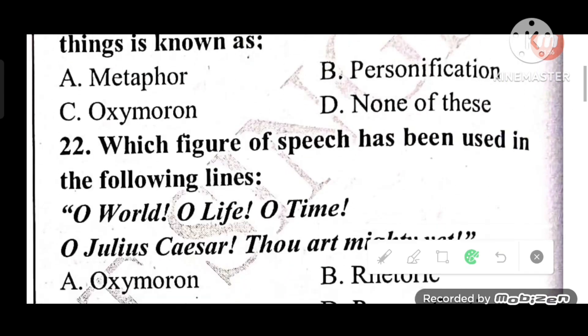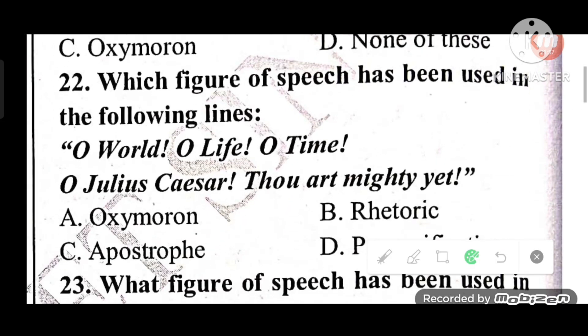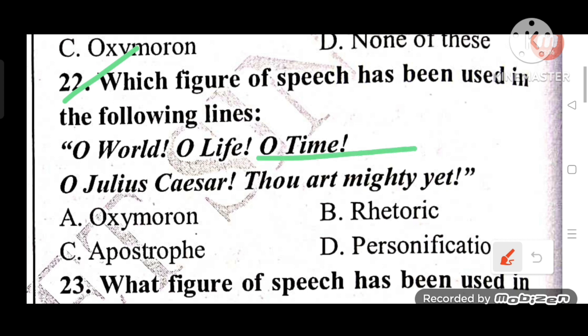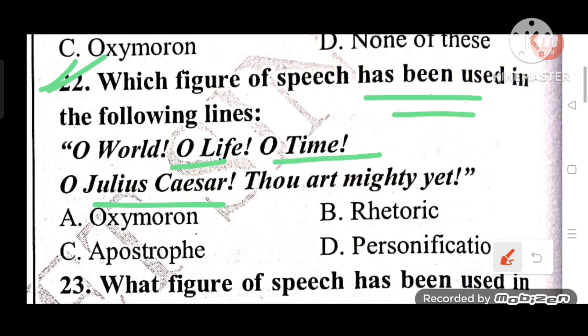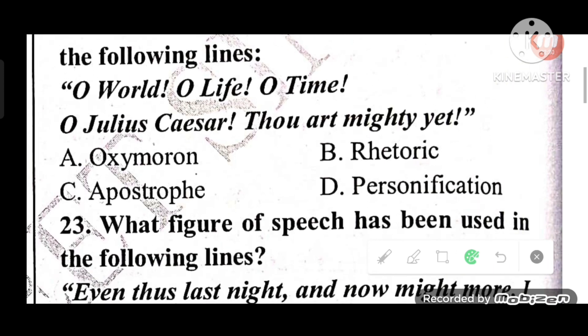Question 22: Which figure of speech has been used in these lines — 'Oh world, oh life, oh time' and 'Oh Julius Caesar, thou art mighty yet'? The answer is C — Apostrophe is used here.